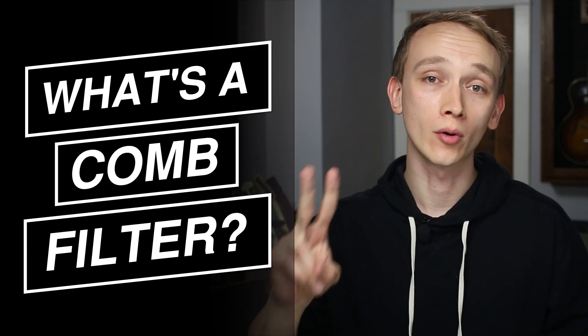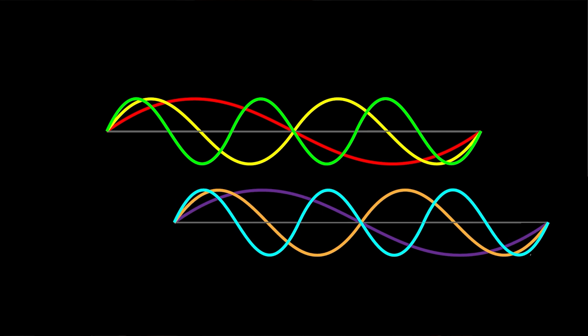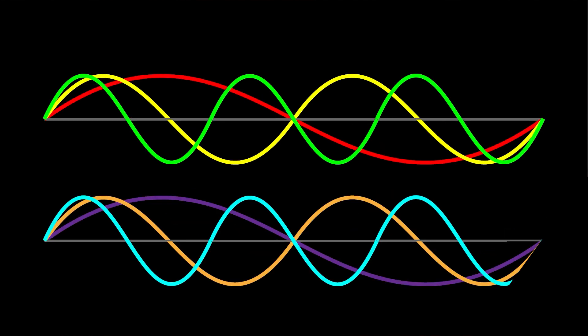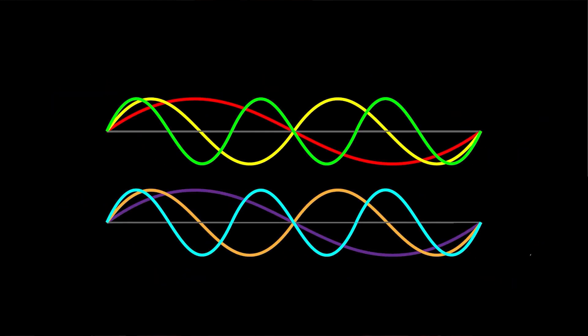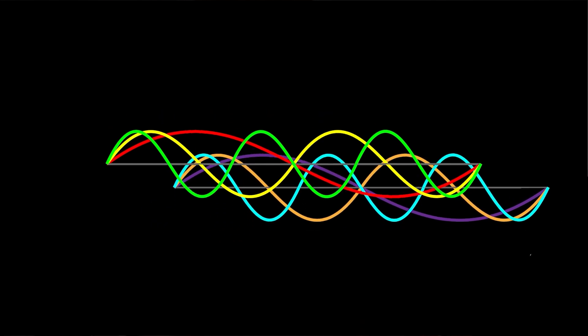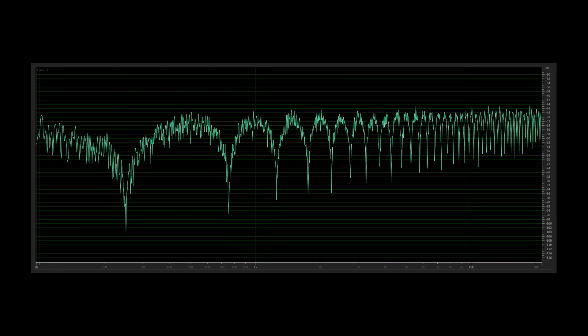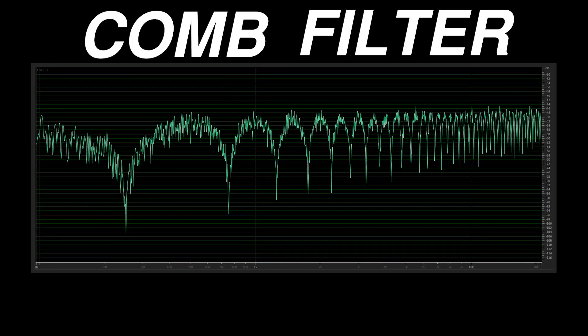Comb filtering is the result of two or more identical signals interacting at a slight delay. Each signal contains many frequencies, each with a different wavelength. When the signals are aligned in time, every frequency lines up perfectly and the two sounds add together to create a louder sound. When the signals are slightly shifted in time, some frequencies add together and some cancel out. The resulting graph resembles a comb, hence the name comb filter.